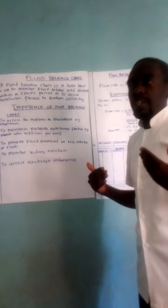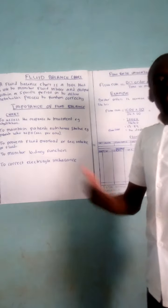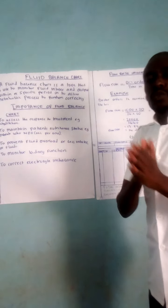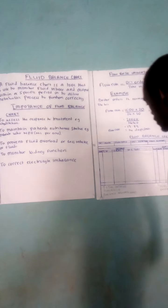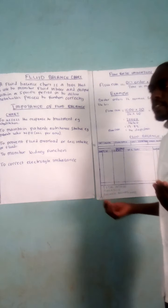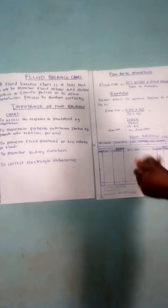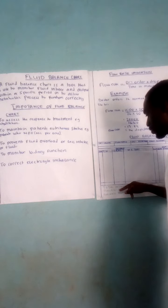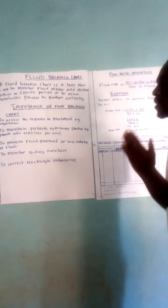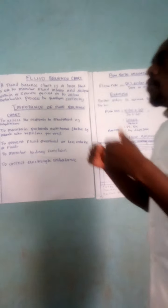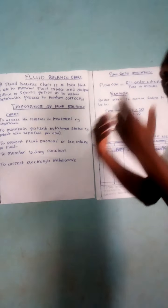You also include the insensible losses. These are fluids we lose from the body that are very difficult to measure, such as sweat and tears. Note that insensible losses may differ according to weather or age. Add the total output and the insensible losses together, then subtract that from the total intake. The difference is written where it says 'balance.'